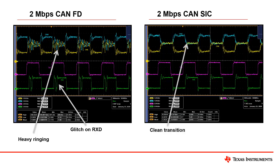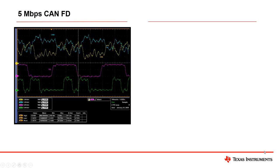Now let's take a look at the CAN-SICK device under the same conditions. Via TI's ringing suppression technology, both the ringing and the glitch are no longer present, which greatly reduces any signal reliability issues that may be present when using CAN-FD transceivers. At 5-megabit-per-second, the ringing and signal glitch are further amplified, with the glitch now crossing over the next transition period.